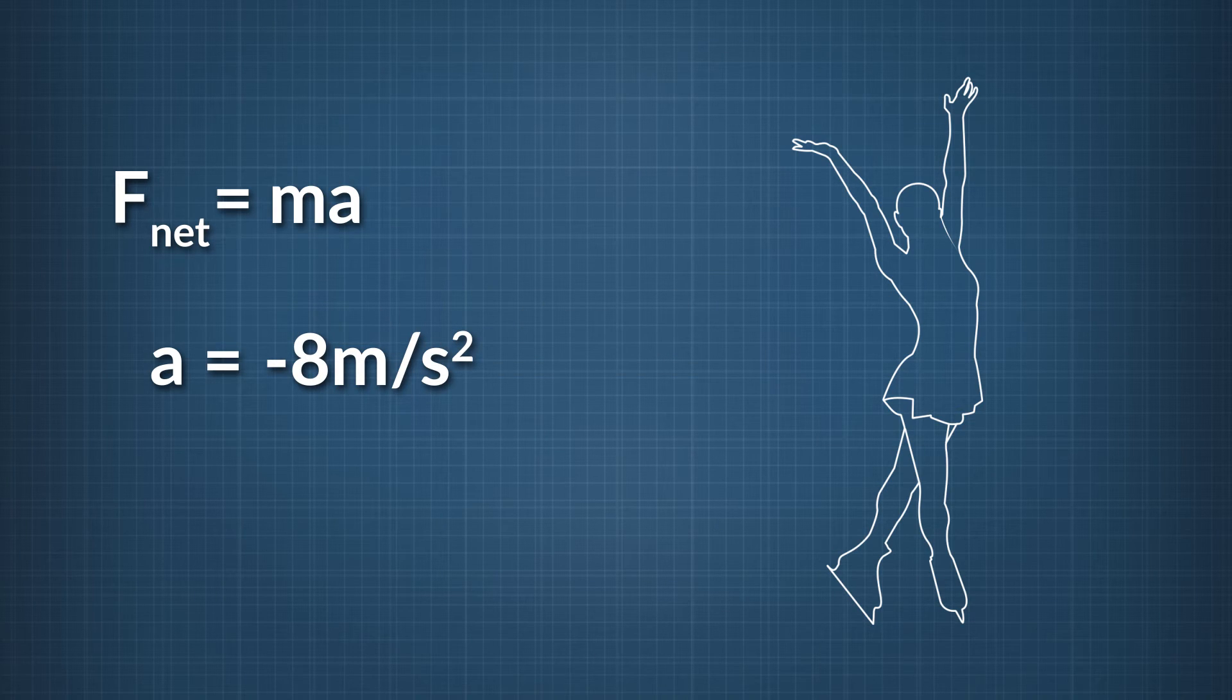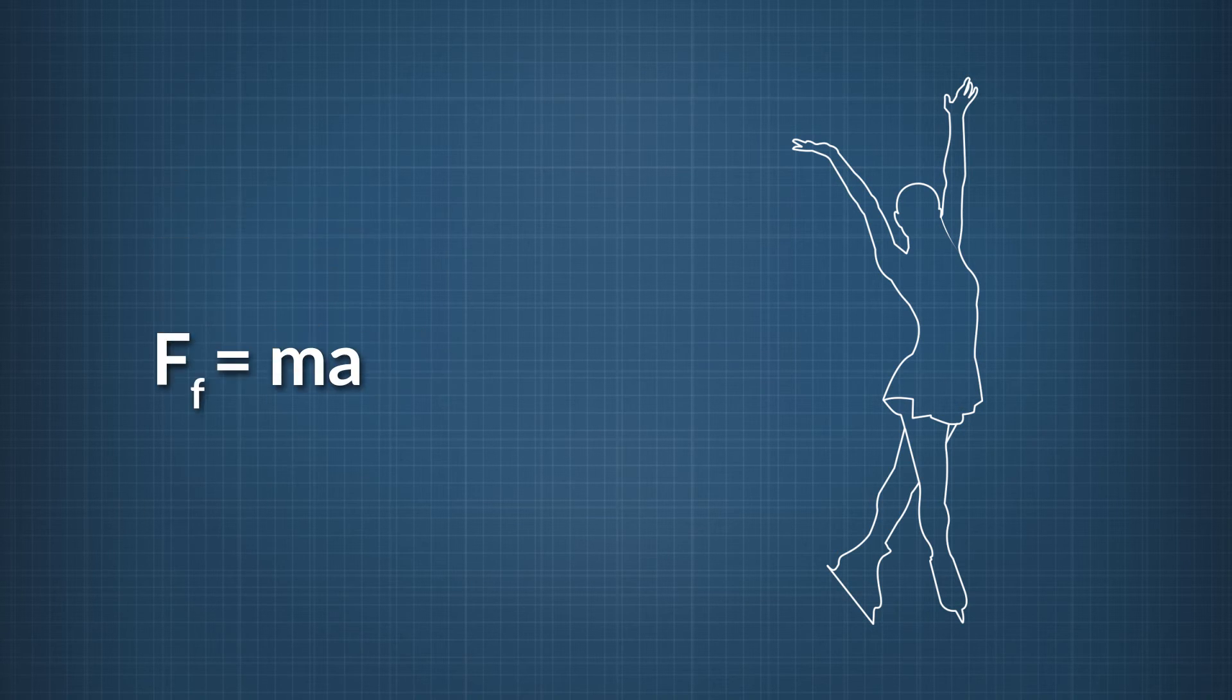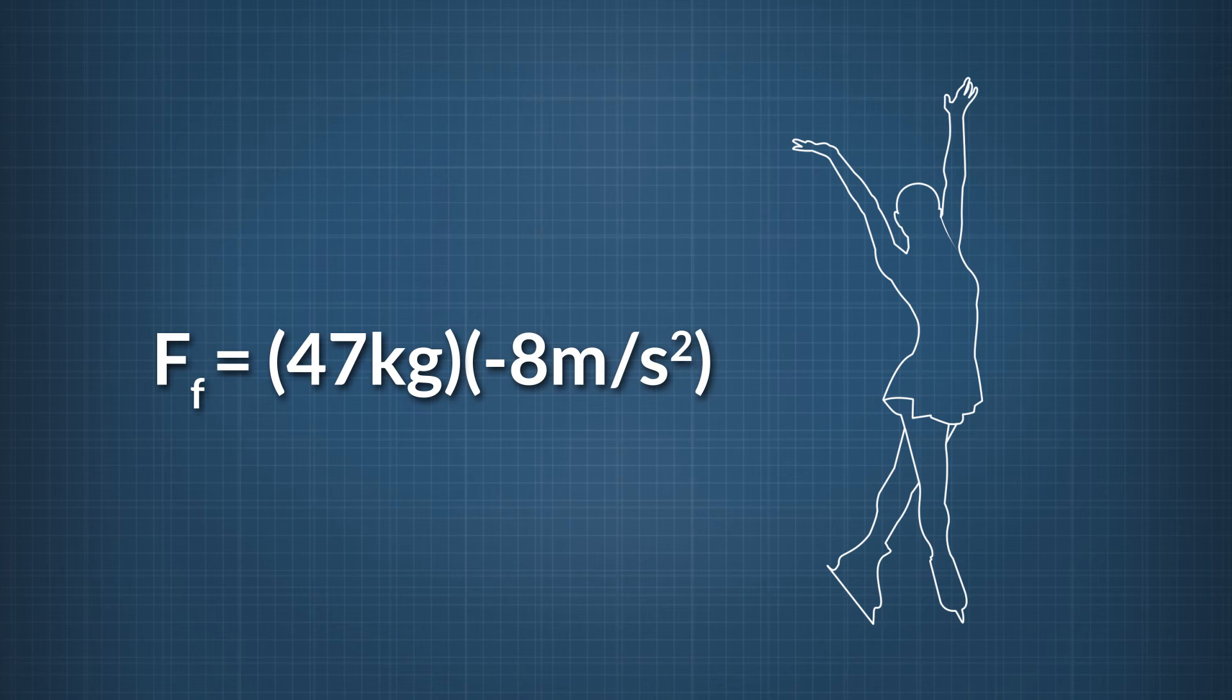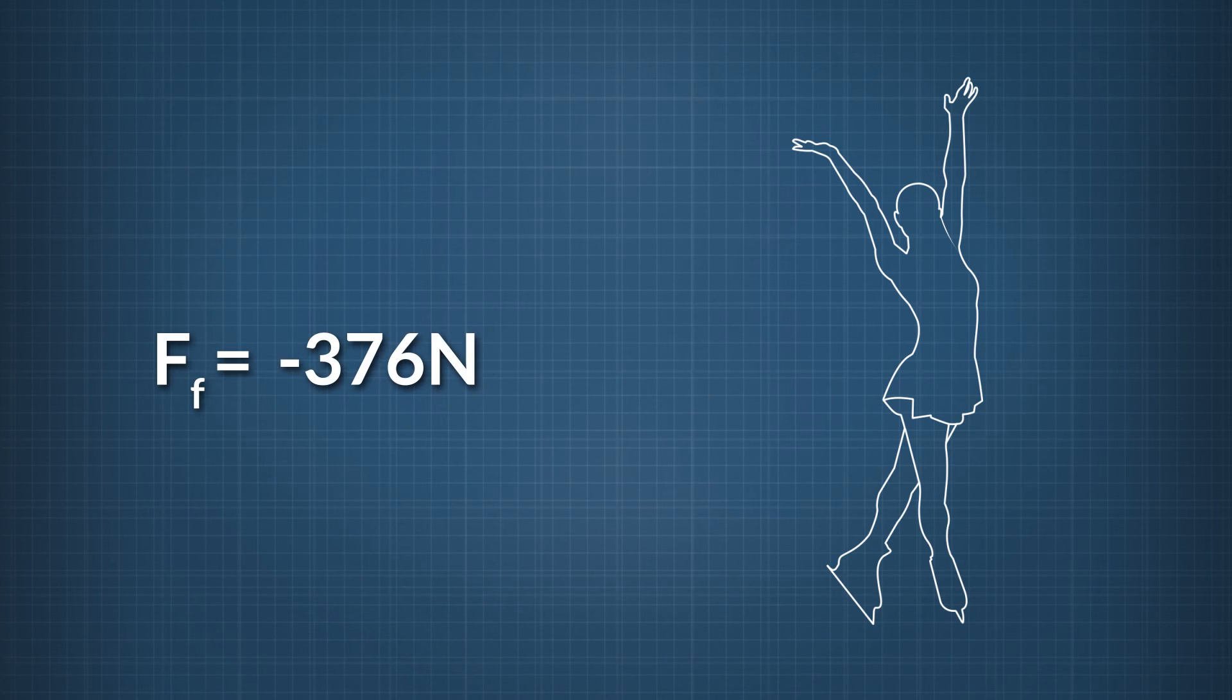Now we can solve for the magnitude of the force acting on the skater as she stops. The force is the force due to friction, F sub F, and it equals the skater's mass, 47 kilograms, times her acceleration, negative 8 meters per second squared, which equals negative 376 newtons. The answer becomes negative 380 newtons when taking into account significant figures.